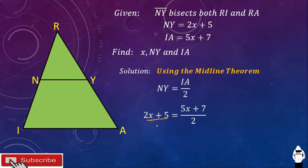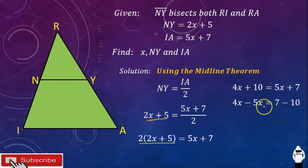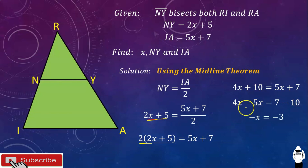Using the Multiplication Property of Equality, we have 2 times (2X plus 5) is equal to 5X plus 7. Simplifying: 4X plus 10 is equal to 5X plus 7. Transposing positive 5X to the left side: 4X minus 5X is equal to 7. Then transposing positive 10 to the right side: 4X minus 5X is equal to 7 minus 10. That gives negative X is equal to negative 3. Dividing both sides by negative 1, X is equal to 3.